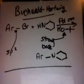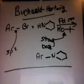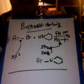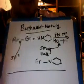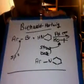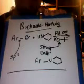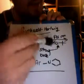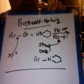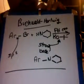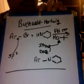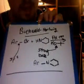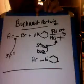In part two of my video I will be covering the mechanism and the reaction of the Buchwald-Hartwig reaction. The Buchwald-Hartwig reaction is between an aryl bromide and a primary or secondary amine or amide. We react these with a palladium catalyst and a strong base such as potassium tert-butoxide, and we end up getting an amine product.